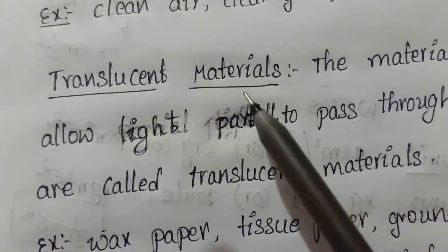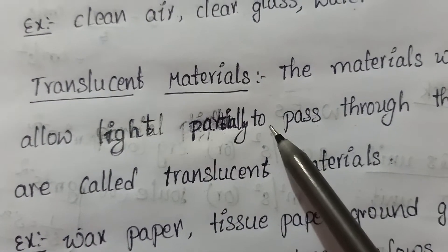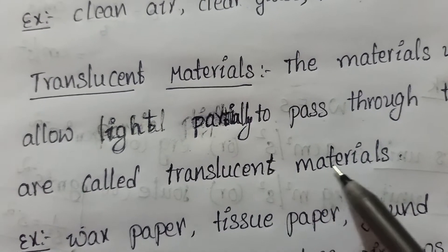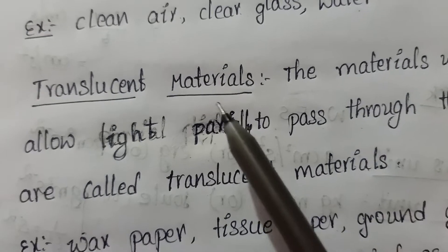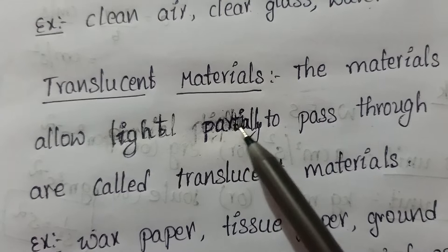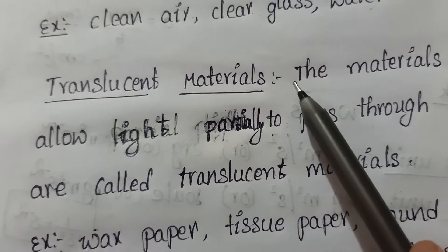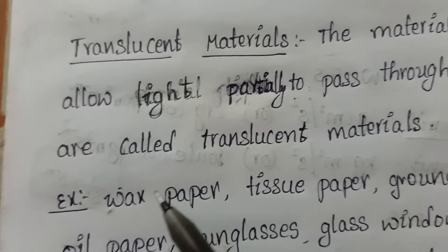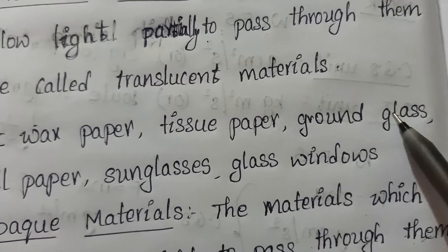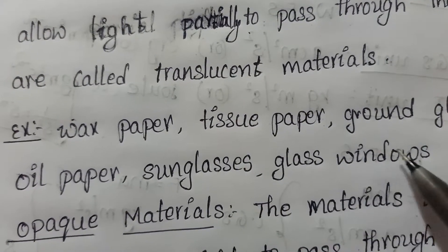Coming to the translucent materials, the materials which allow light partially to pass through them are called translucent materials. These materials will allow the light only partial portion. Partially they will allow the light to pass through them. For example, wax paper, tissue paper, ground glass, oil paper, sunglasses, glass windows.